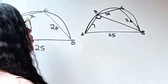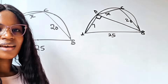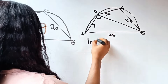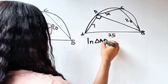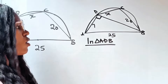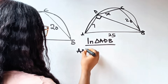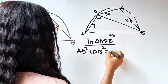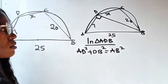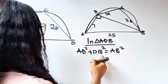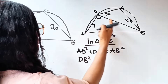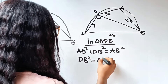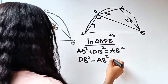So we have 90 degrees here, and using the Pythagorean theorem in triangle ADB: AD² + DB² = AB². So DB² = AB² − AD². We want to find the length DB.